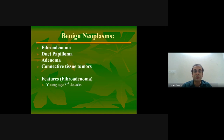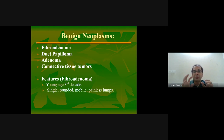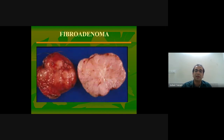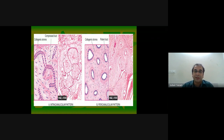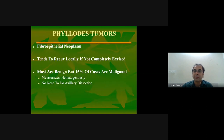The most common benign condition is fibroadenoma, seen in the third decade, also called the 'mouse in the breast' because it has a characteristic feeling of slipping away — a rounded, mobile, painless lump with no scarring or calcification. Fibroadenoma is comprised of two components — glandular and stromal — with the glandular component showing two patterns: pericanalicular and intracanalicular. There is stromal proliferation accompanied by epithelial cell proliferation. Fibroadenoma is completely benign.